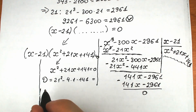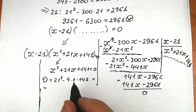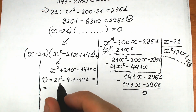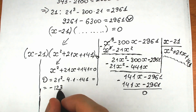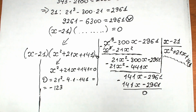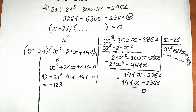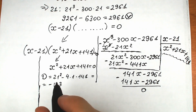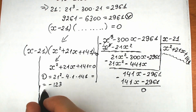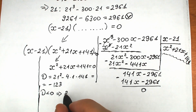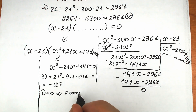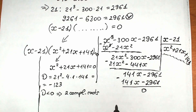21 squared minus 4 times 141 equals minus 123. The discriminant is negative, which means we have two complex roots here.